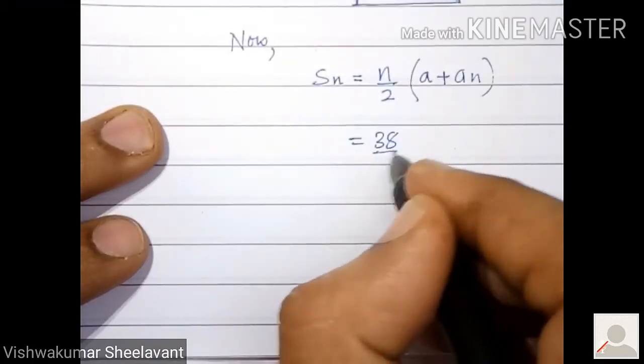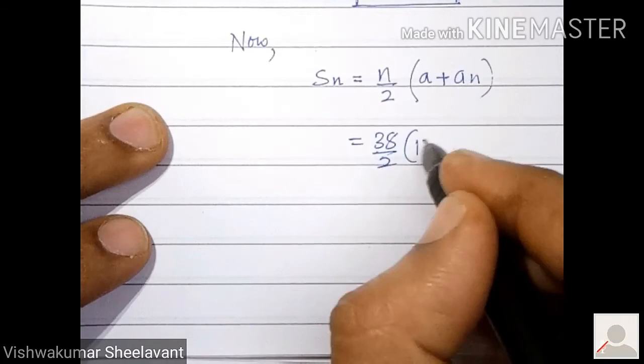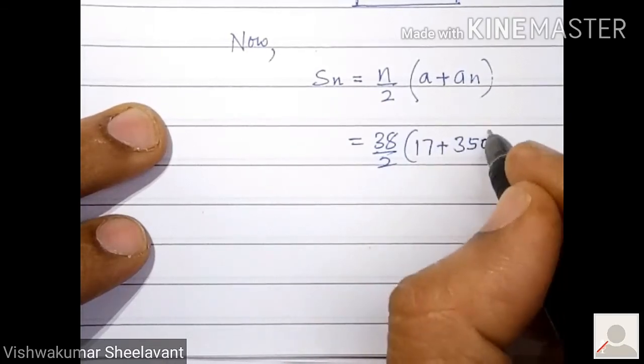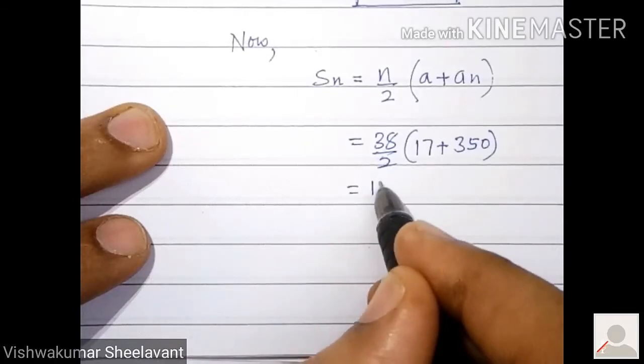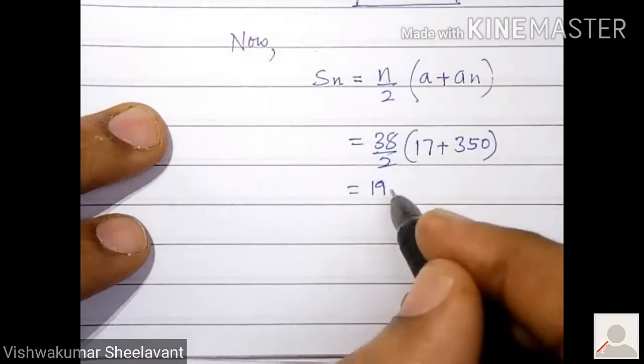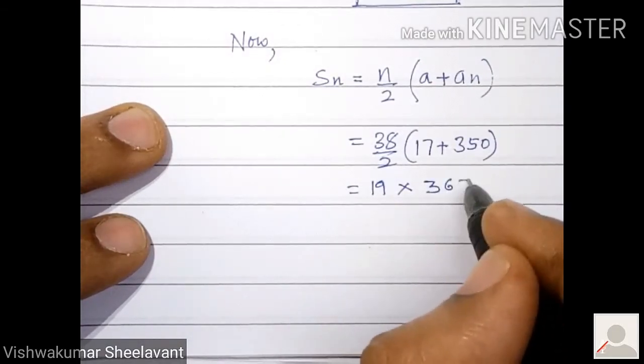38 by 2 into the bracket, a is 17, an is 350, 19 into 367.